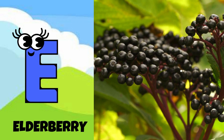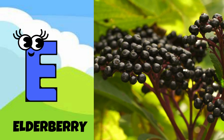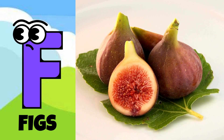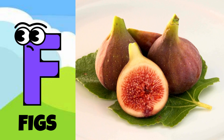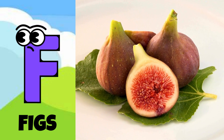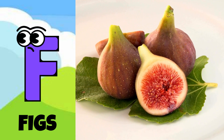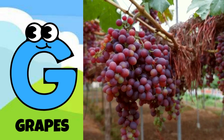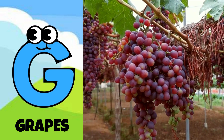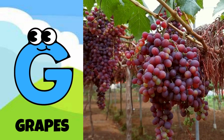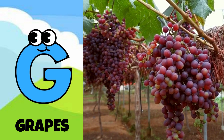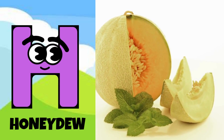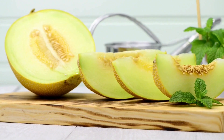E is for elderberry, e-e-elderberry. F is for fig, f-f-fig. G is for grapes, g-g-grapes. H is for honeydew, ha-ha-honeydew.